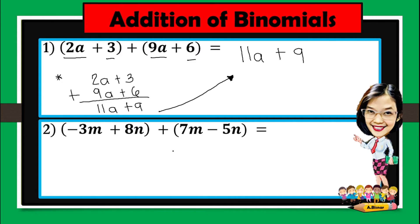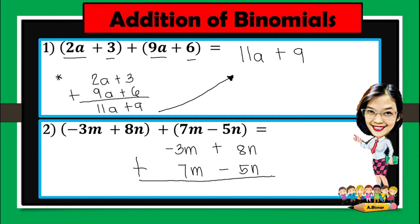Let us try to solve this vertically. Negative 3m plus 8n plus 7m minus 5n. So again, just simply use what we have studied about addition of integers. Negative 3m plus 7m is 4m. Now positive 8n plus negative 5n, we will have positive 3n. And so the answer is 4m plus 3n.